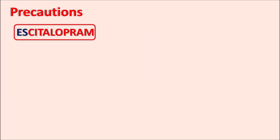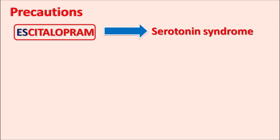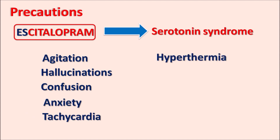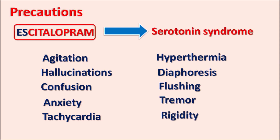Another important precaution is that escitalopram can precipitate serotonin syndrome — observed with SSRIs and SNRIs. This syndrome produces symptoms such as agitation, hallucinations, confusion, anxiety, tachycardia, hyperthermia (increased body temperature), diaphoresis (increased sweating), flushing, vasodilation, tremor, and muscle rigidity. This syndrome is particularly observed when escitalopram is combined with MAO inhibitors or other drugs that increase serotonergic activity.